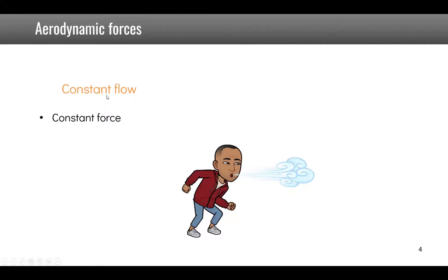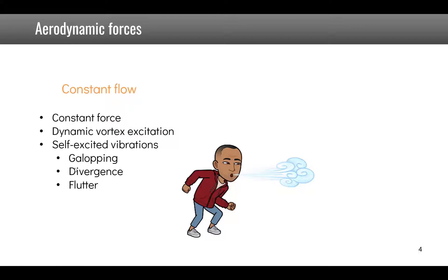Constant flow brings constant force and can lead to dynamic effects such as vortex-induced vibration, self-excited vibration, so instabilities in the form of galloping, divergence, and flutter. Here we are dealing with the turbulent flow, the other part of the wind which brings a dynamic force which could bring the structure in resonance.